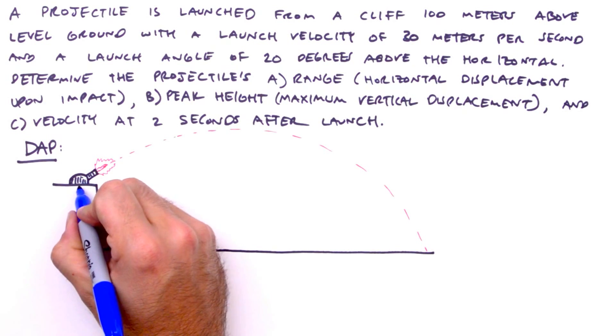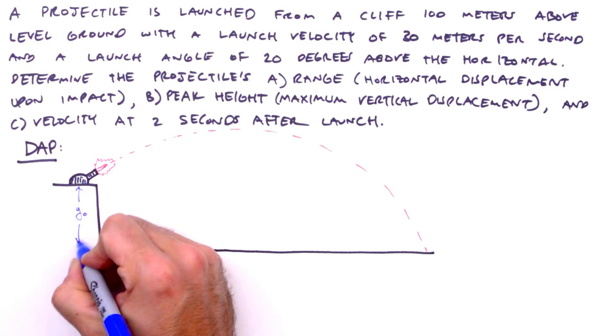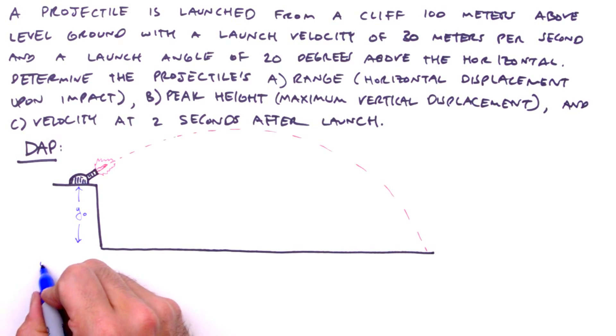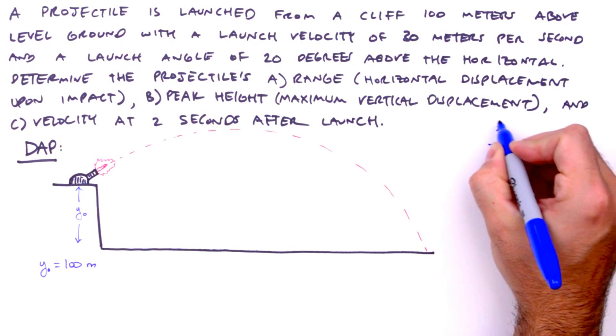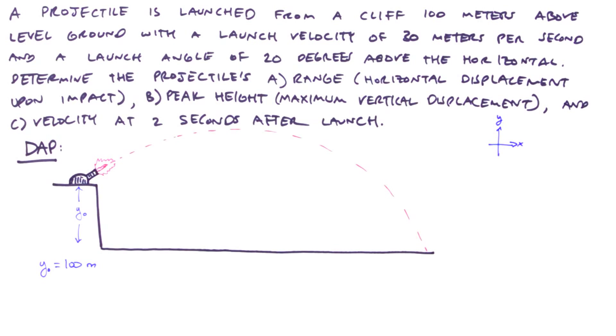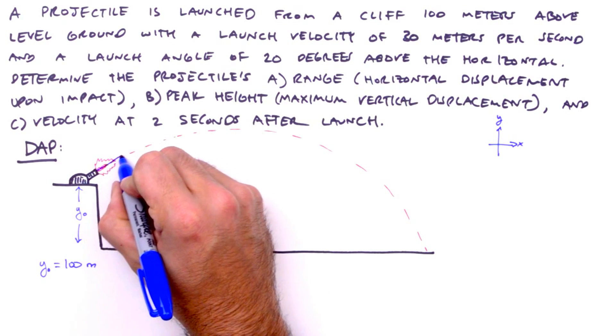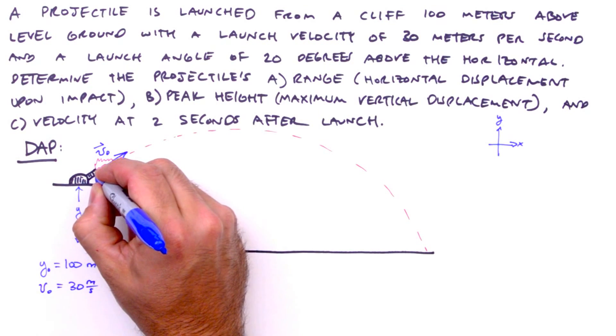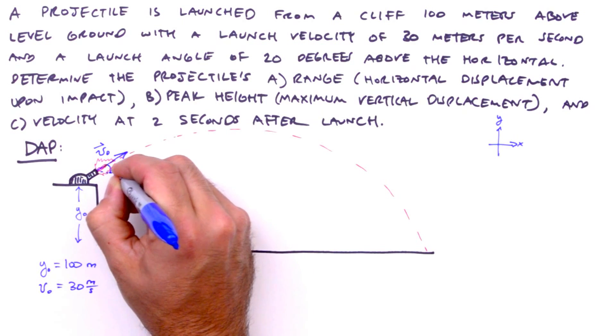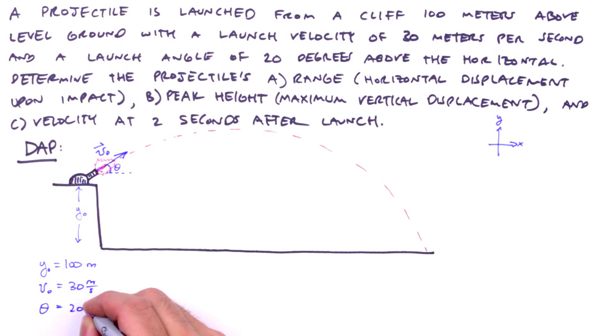So what are our knowns and unknowns? To start, we're given the height of the cliff, which is to say the initial vertical displacement, and that's 100 meters. Of course, we've already implied our coordinate system, but we need to be explicit and include it on our drawing. Next, we're given the magnitude of the launch velocity, the initial speed of our projectile, 20 meters per second. We're also given the direction of the launch velocity, so we'll label the angle between the velocity vector and the horizontal as theta, and theta is equal to 20 degrees.